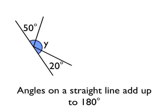In this second example, I've now got three angles which are on a straight line. There's the 50 degree angle, the 20 degree angle, and then an unknown angle which I've labelled angle Y.